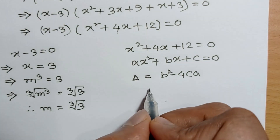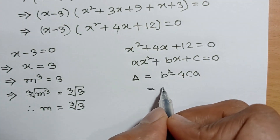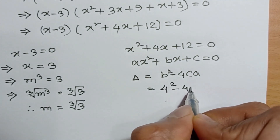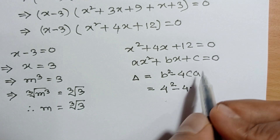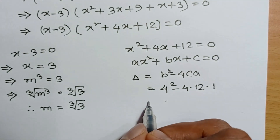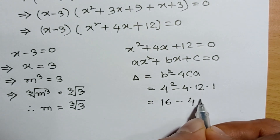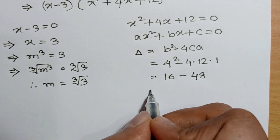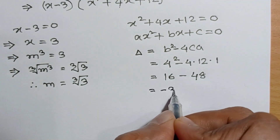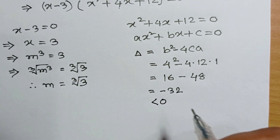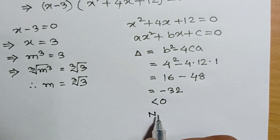Putting in the values — a equals 1, b equals 4, c equals 12 — we get 4 squared minus 4 times 12 times 1, which is 16 minus 48, equal to minus 32, which is less than 0. So there is no real root for this factor.